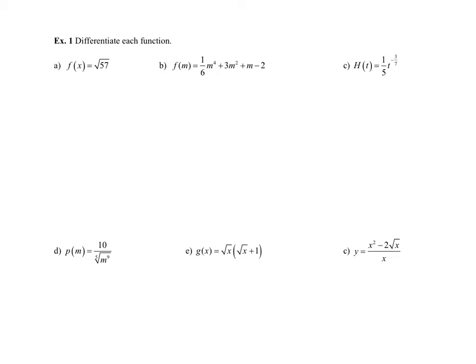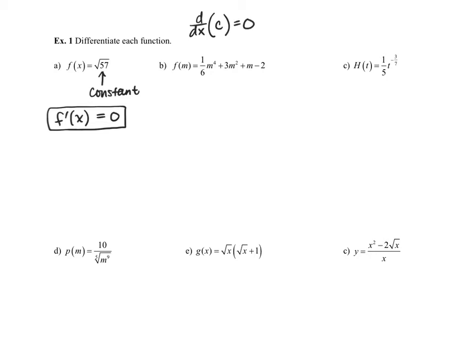Example a is asking for the derivative of the function f(x) equals the square root of 57. Remember, the square root of 57 is just a constant value. So the derivative of a constant is always going to be zero. So f prime of x for part a will be zero, because a constant is just a horizontal line graphically, and the slope of a horizontal line will always be zero.